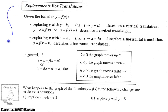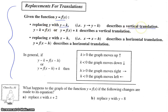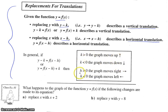We've summarized everything here. If you're given the function y equals f of x, if you replace y with y minus k, it's a vertical translation. If you replace x with x minus h, it's a horizontal translation. In particular, if k is greater than zero the graph moves up; if k is less than zero it moves down. And h is greater than zero it moves right; h is less than zero it moves left.